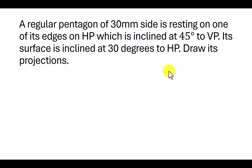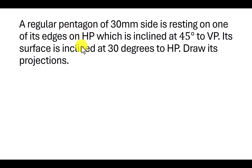In this video we will learn how to create a regular pentagon whose side is 30mm. One of its sides or edges is resting on the HP and the resting edge is inclined at 45 degrees to the VP. The surface of the pentagon is inclined at 30 degrees to the HP. So two inclinations are given: the surface inclination of 30 degrees and the edge inclination of 45 degrees with the VP.